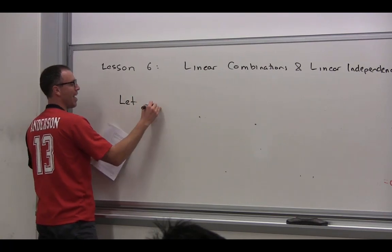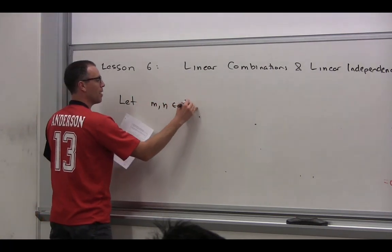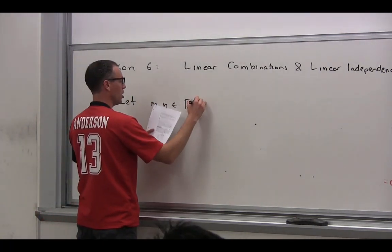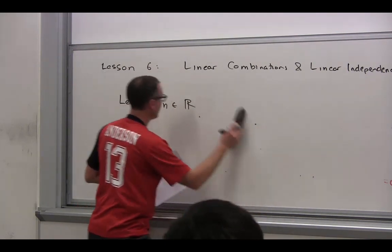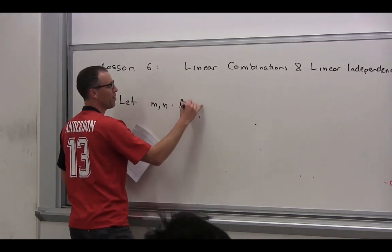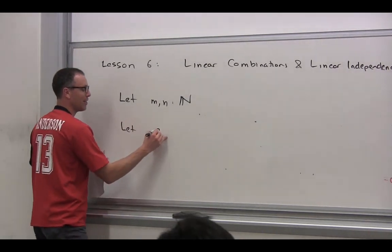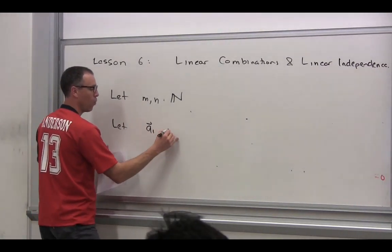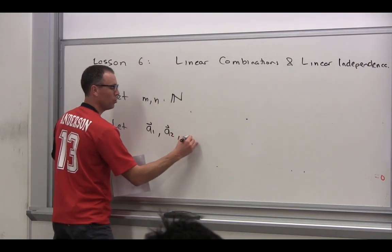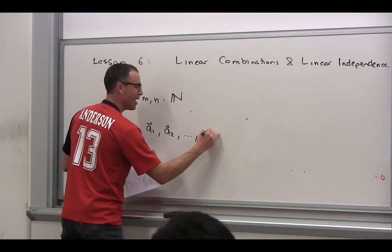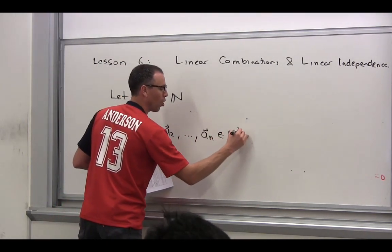Let's let M and N be an element of R, oh excuse me, be an element of the natural numbers. And then we'll say, let's let A1, A2, all the way to AN be an element of R^M.